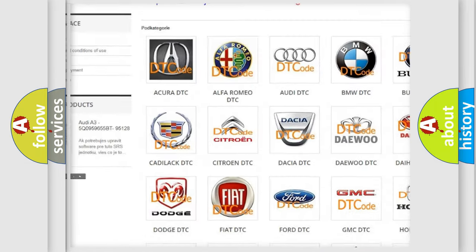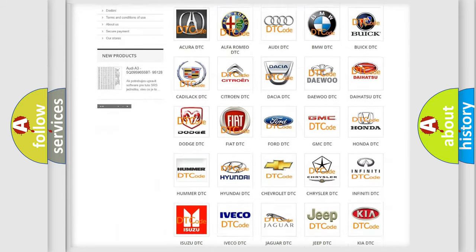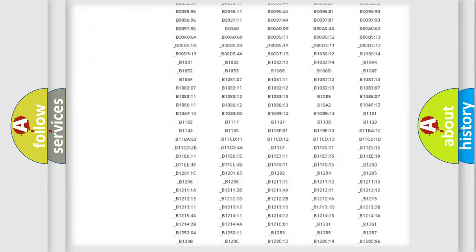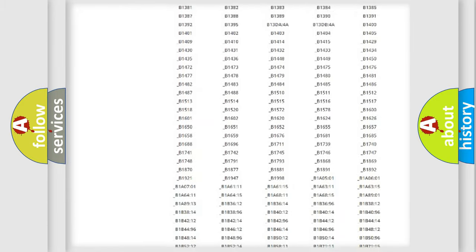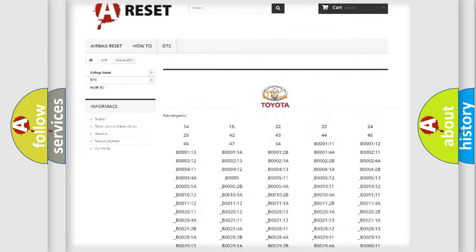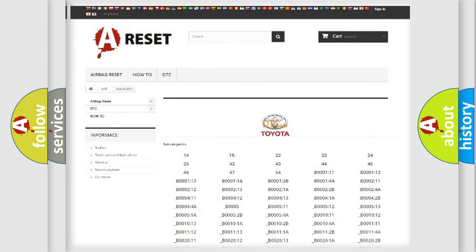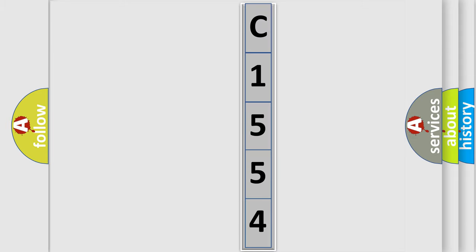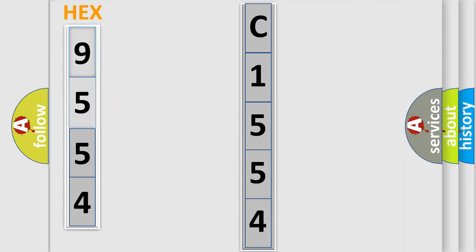Our website airbagreset.sk produces useful videos for you. You do not have to go through the OBD2 protocol anymore to know how to troubleshoot any car breakdown. You will find all the diagnostic codes that can be diagnosed in Toyota vehicles, and many other useful things. The following demonstration will help you look into the world of software for car control units.